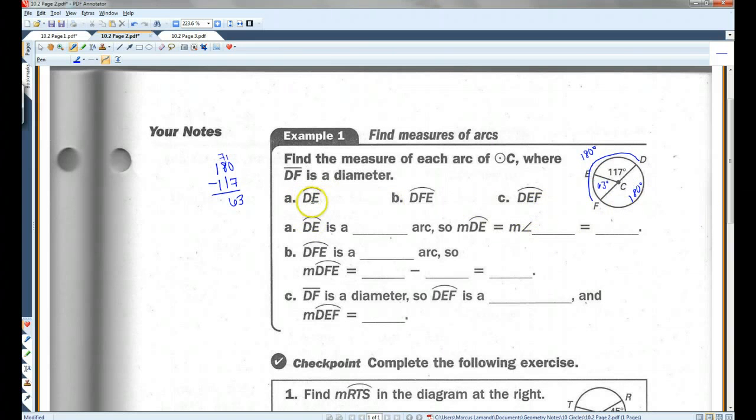So, let's go through this. Arc DE. Arc DE is a minor arc. So, the measure of arc DE equals the measure of angle DCE, which is 117 degrees.